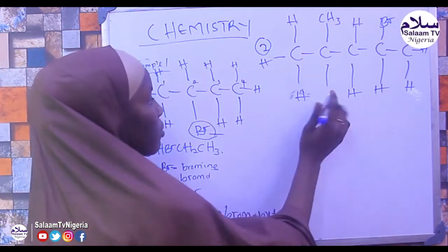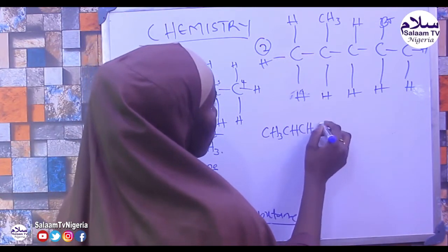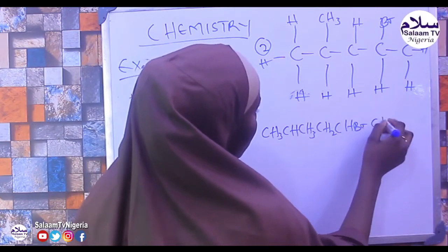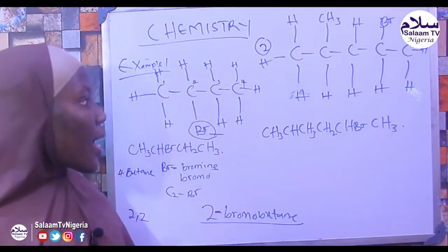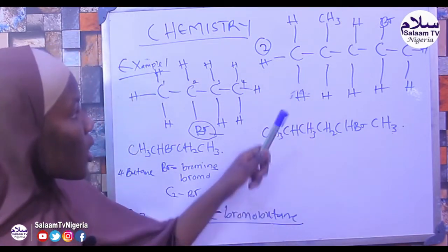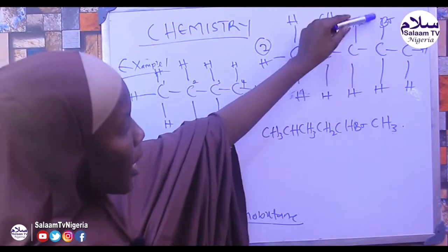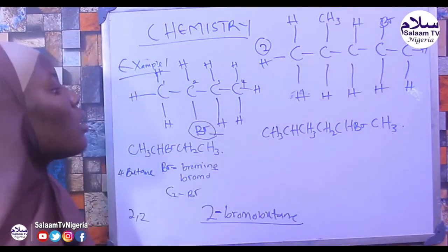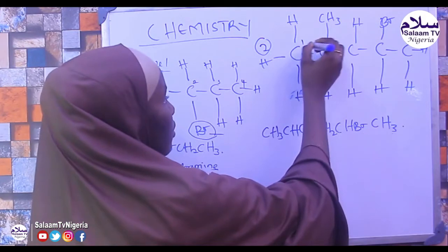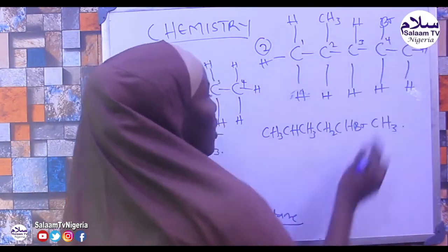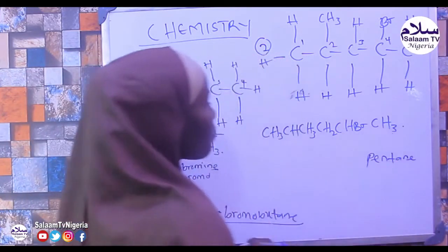Example 2. We expand the formula: CH3, then CH with substituents, then CH2, then CH3. The longest carbon chain is 1, 2, 3, 4, 5 — so the parent name is pentane. We call it pentane because there are 5 carbons.